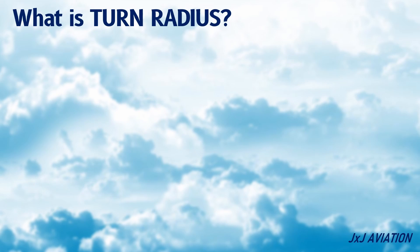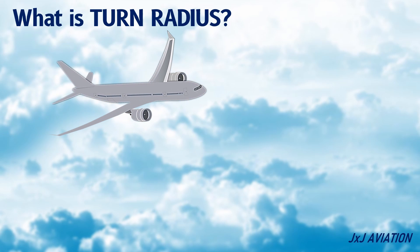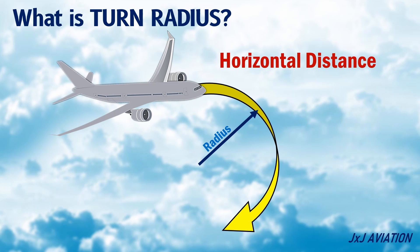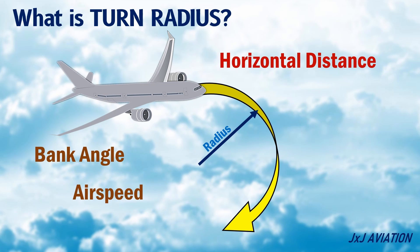What is Turn Radius? This is defined as the horizontal distance which is used by an aircraft to turn. The turn radius depends on the bank angle and the airspeed of the aircraft.